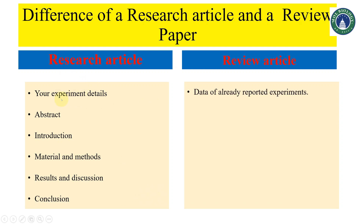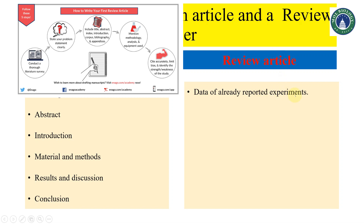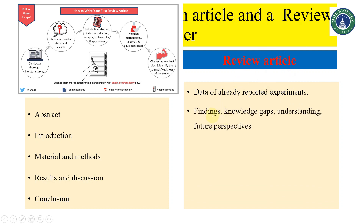In a research article you provide details of your own experiment, but in a review article you only report and write data from already reported experiments. When writing a review article you don't need to do any experiment — you just need to read many papers and make a draft about the findings. You can gather all the findings, identify knowledge gaps about a specific topic, build your own understanding, and give future perspectives on what studies have been done and what studies are needed.